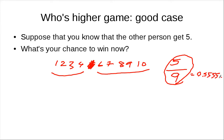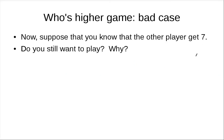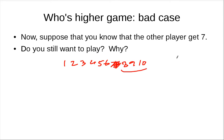Now let's look at another case. If you know that the other person gets seven, what's your chance to win? The numbers 1 through 10, but 7 is gone. Your ways to win are only 8, 9, 10 — that's 3 out of 9, which is less than one-half. So you might not want to play at this point. This is the kind of change that affects your probability calculation because you know something.